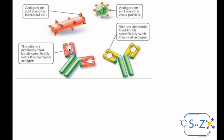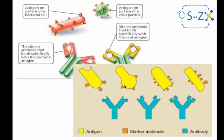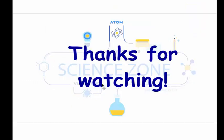For example, there are antibodies whose binding sites match bacteria with a triangular surface marker — so their binding site is also triangular. Another antibody can bind specifically to a virus particle with a circular surface marker — so the binding site is circular. For each non-self molecule or cell, there is a specific antibody with a specific binding site: circular for circular, triangular for triangular, and so on. That's all for today — thanks for watching!